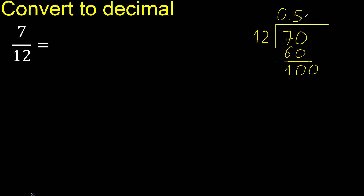12 multiplied by 9 is greater, so multiply by 8 — that's 96. Subtract and complete. Remainder is 40. 12 multiplied by 3 is 36.